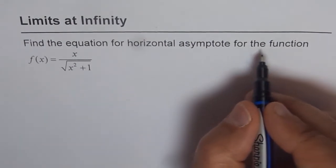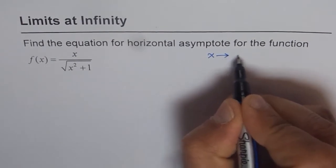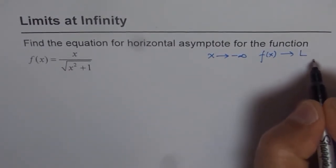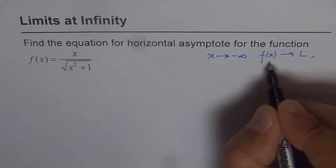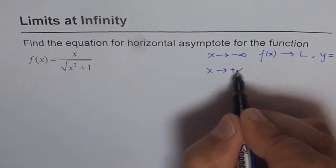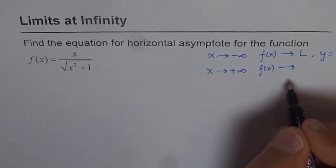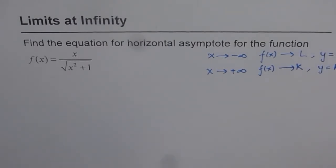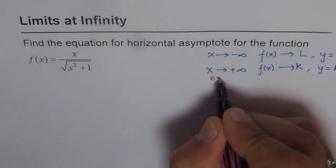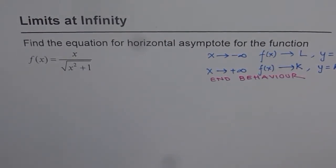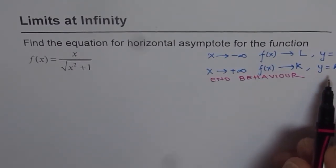A horizontal asymptote describes the behavior of a function near infinity. When x approaches negative infinity, if the function approaches one fixed value L, then we have a horizontal asymptote and its equation is y = L. Similarly, when x approaches positive infinity, if the function approaches a value k, then y = k is the equation of the horizontal asymptote. This is essentially the end behavior — if the function approaches a value, the horizontal asymptote exists; if not, it does not exist.